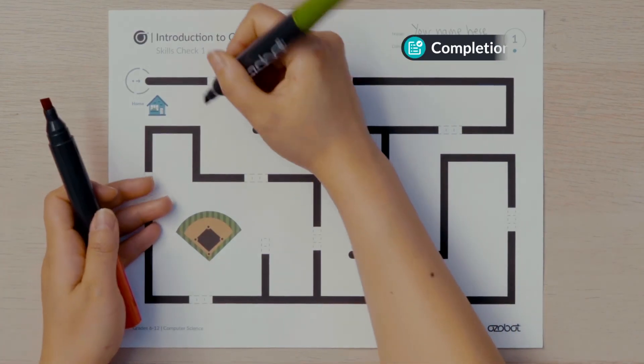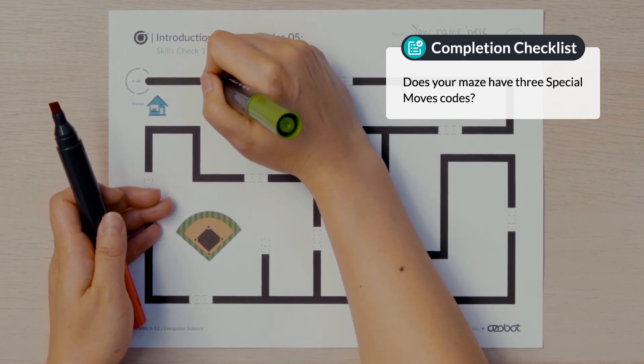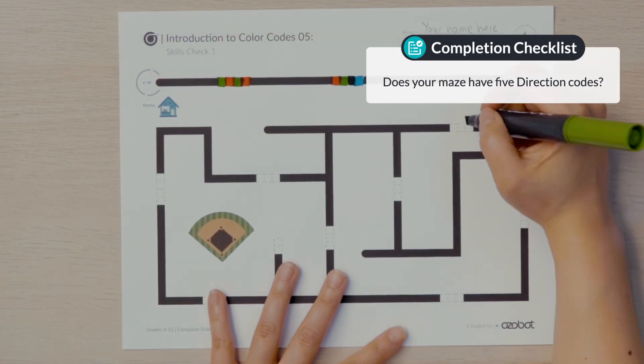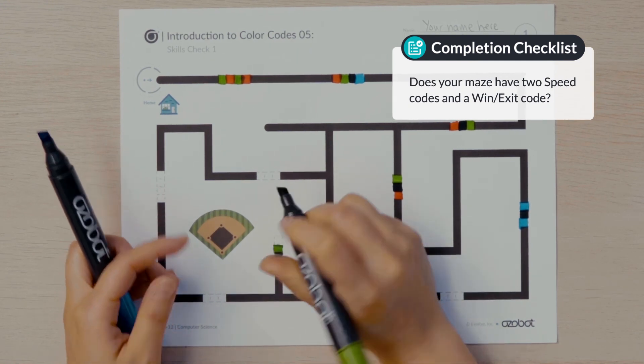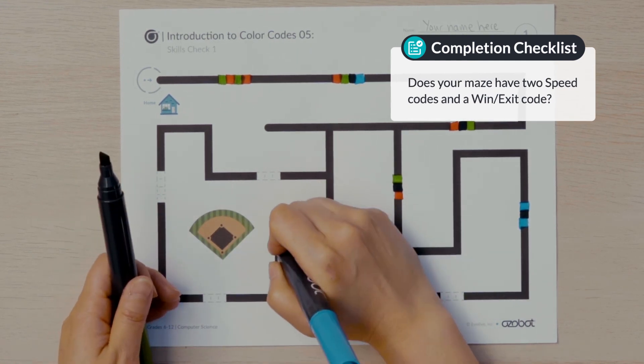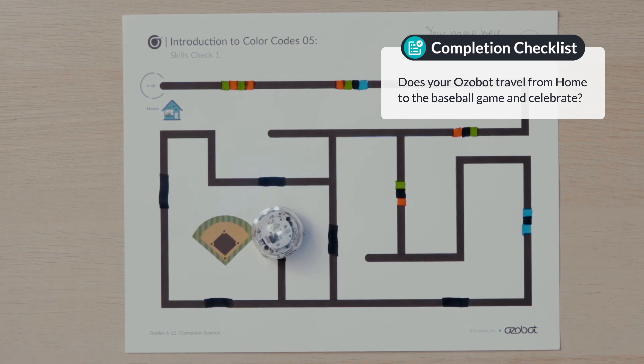Make sure you're finished with the skills check. Does your maze have three special moves codes? Does your maze have five direction codes? Does your maze have two speed codes and a win-exit code? Does your Ozobot travel from home to the baseball game and celebrate?